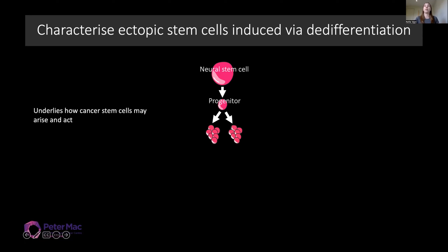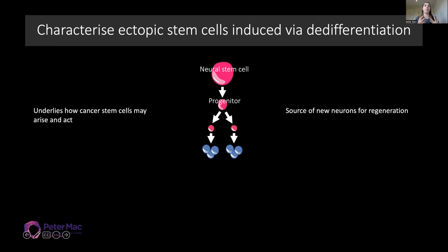Firstly, it can inform us how cancer stem cells may arise, but also why they're not obeying different signals to differentiate and why they have unlimited proliferative potential. On the flip side, de-differentiation can also be a source of new neurons for regeneration. So we also need to know how faithful this process is from ectopic stem cells — whether we would get a successful regeneration or a more tumorigenic phenotype.